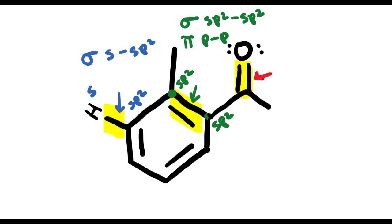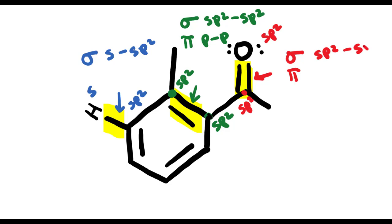Let's look at another example. Here we have another double bond, which has both a sigma bond and a pi bond. When trying to figure out what orbitals cause the sigma bond overlap, we look at the hybridization of the oxygen, which is sp2, and the hybridization of the carbon at the bottom, which is sp2 as well. So the sigma bond is formed from sp2 to sp2 overlap. And remember, pi bonds are always formed from p to p overlap.